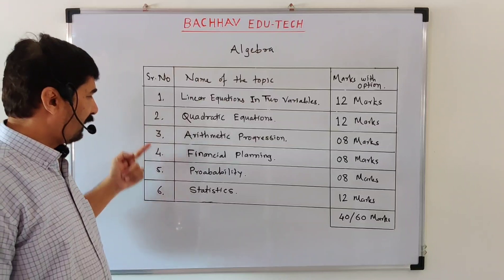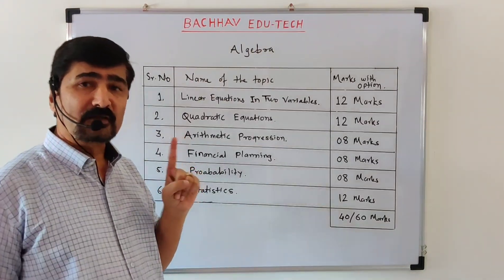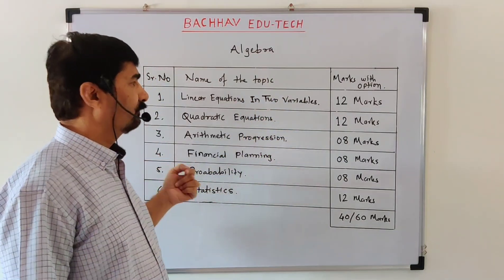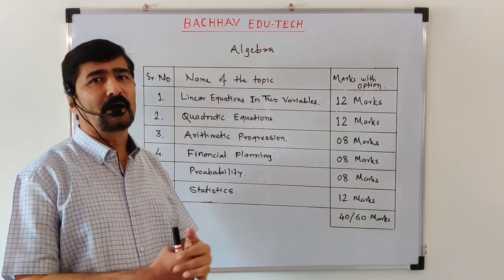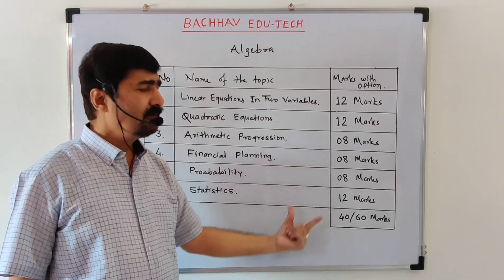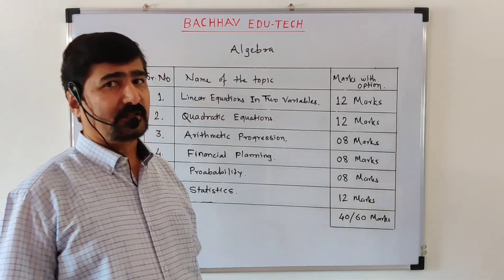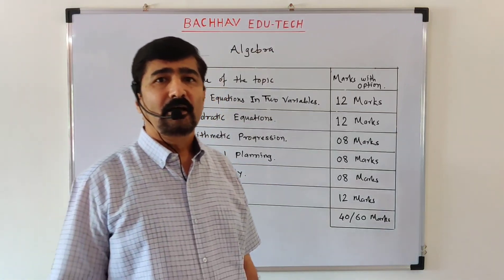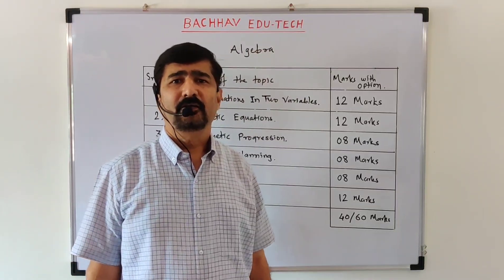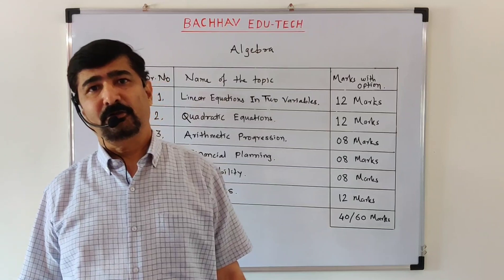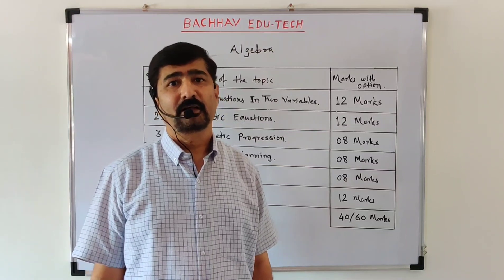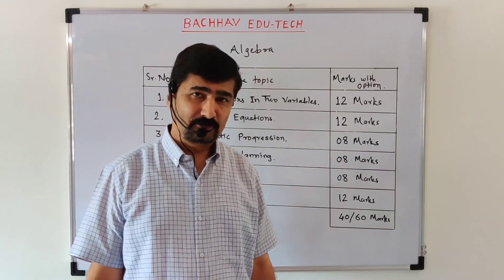Chapters 1, 2, and 6 carry 12 marks each, so these are important. Chapters 3, 4, and 5 carry 8 marks each, contributing 24 marks. All chapters are important — we have to score 100 out of 100, means 50 out of 50 from algebra. All chapters are required to be prepared.